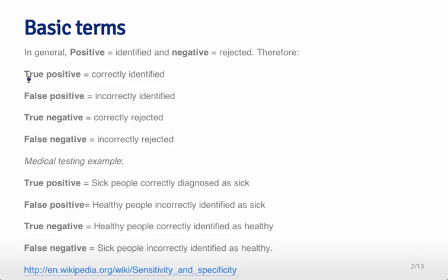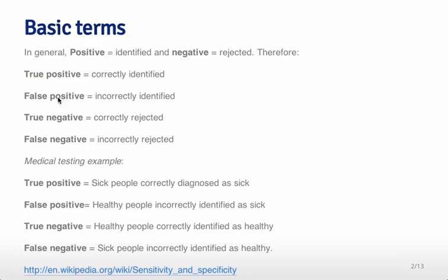So as an example, the 'true' part of true positive means that the truth is that there was actually something to identify — a positive. In other words, we actually identified you as belonging to that class. Similarly, for a false positive, the 'positive' part refers to the fact that we identified you as being part of the positive class, and 'false' refers to the fact that we were wrong — we didn't actually classify you to the correct class.